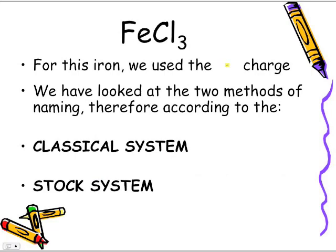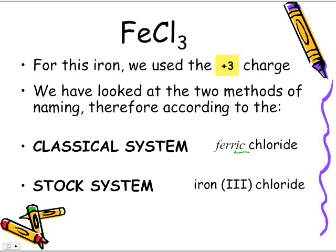Looking at the other example using the plus three charge — the higher charge. In the classical system, ferrum becomes ferric, so it's ferric chloride. -IC tells us we're using the higher of the two charges. In the stock system using Roman numerals, it's iron(III) chloride.